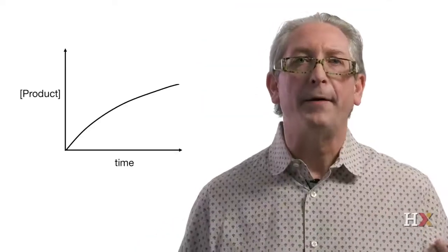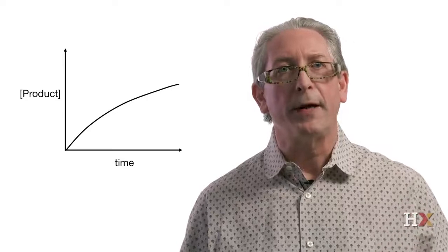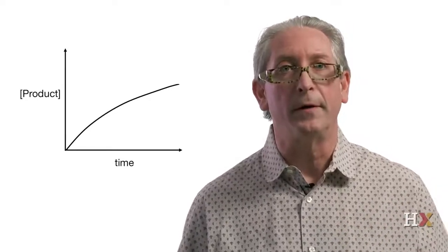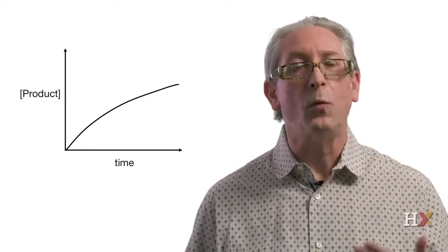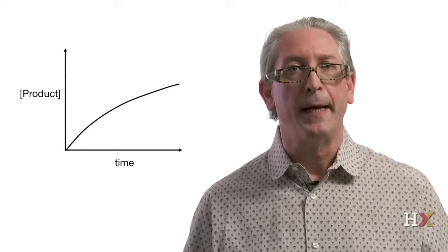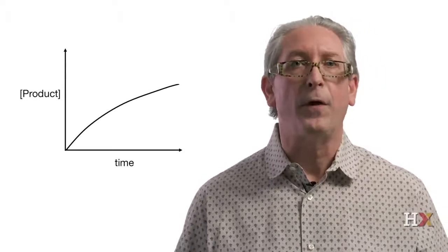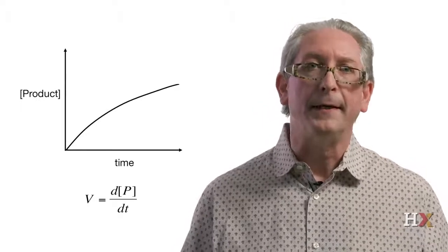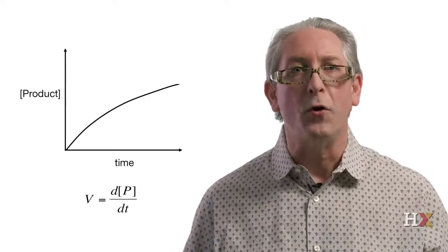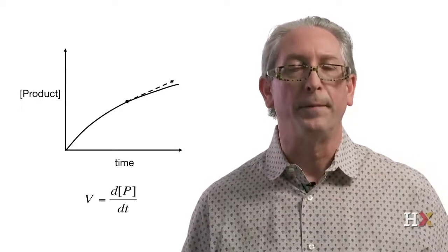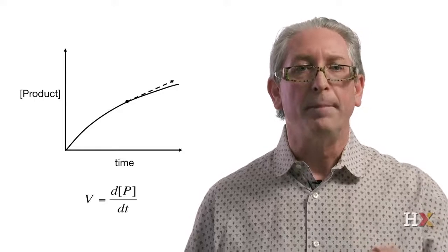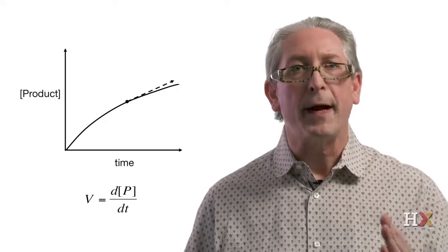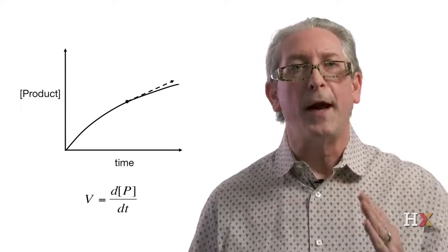Measuring the intensity of the yellow color gives us a direct correlation between that color intensity and the concentration of product. If we plot the concentration of product — or the intensity of the yellow color — as a function of time, what we get is a hyperbolic curve. The velocity of the reaction is the amount of product formed over time, which graphically represents the slope of the tangent at any point along the curve. As the reaction proceeds, the slope decreases, so the velocity decreases.